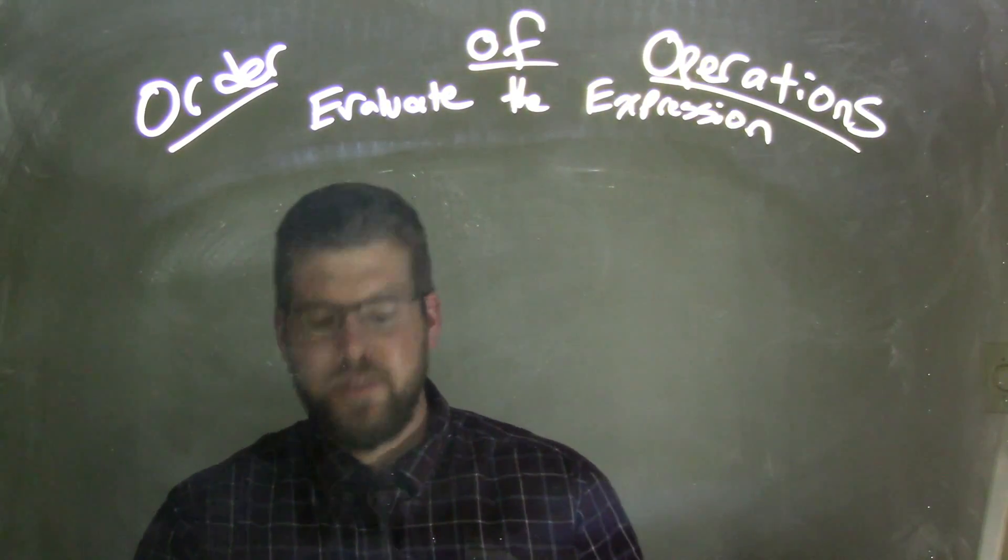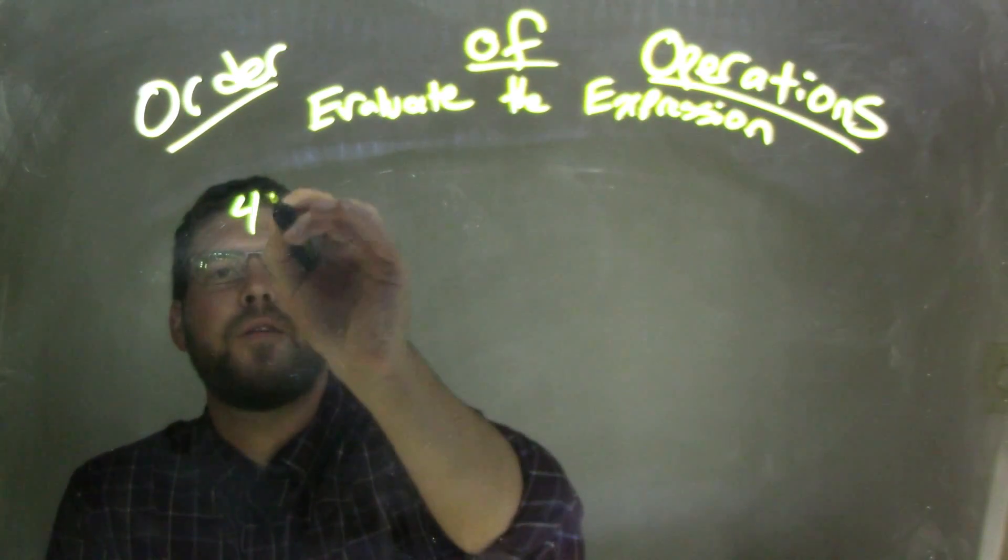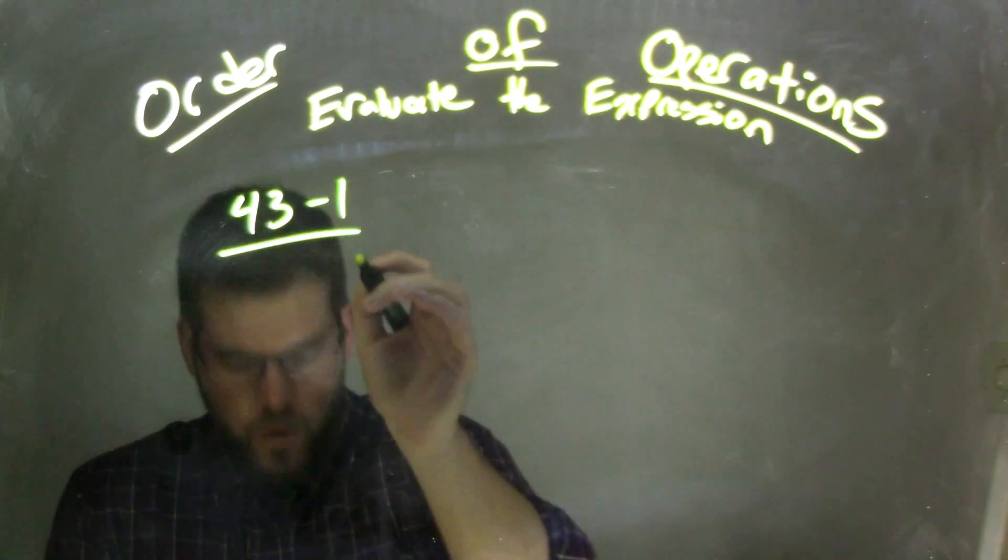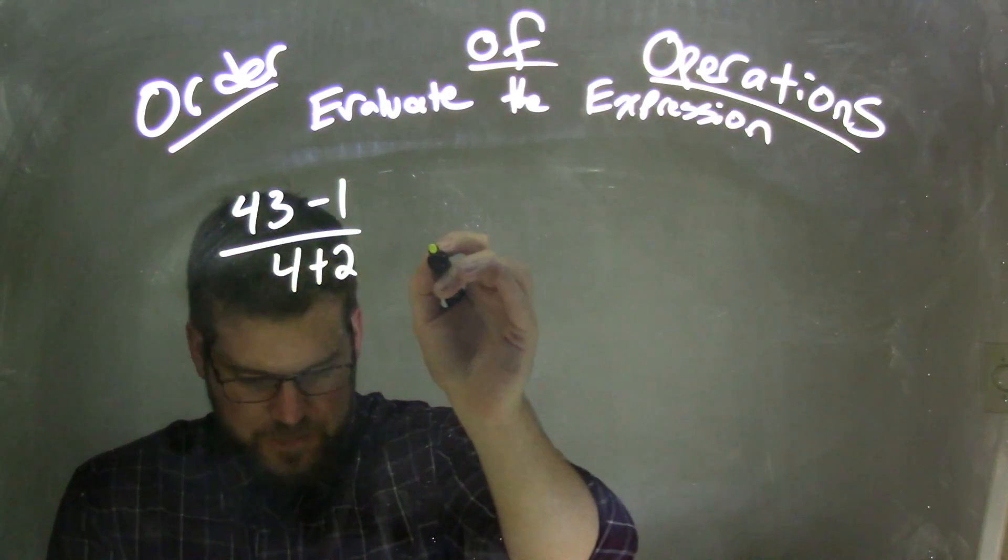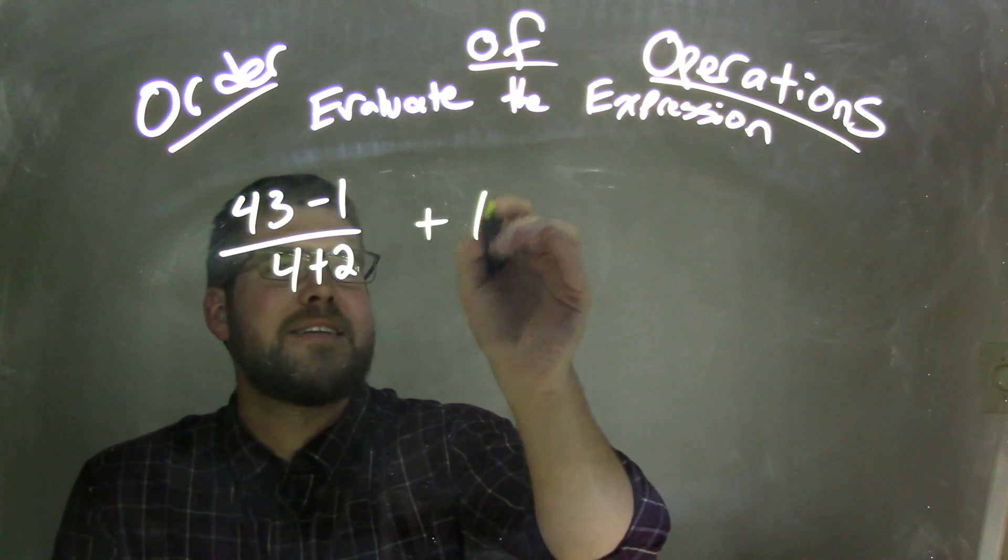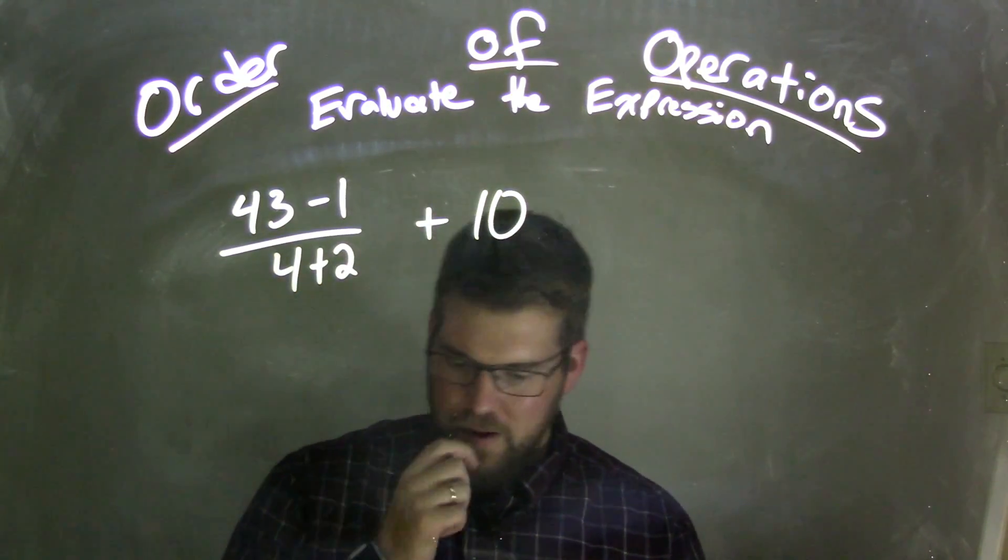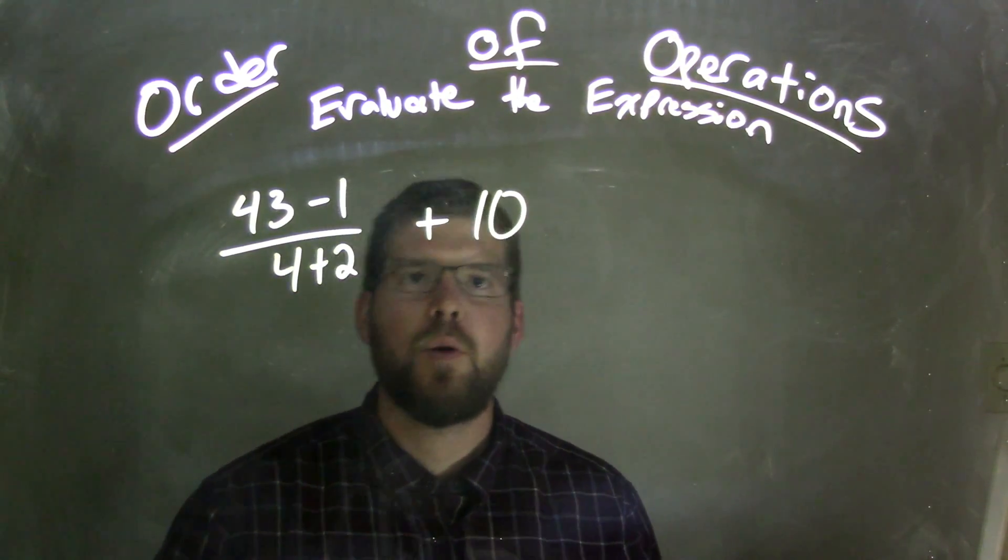So if I was given this expression, 43 minus 1 over 4 plus 2, all plus 10. So we have 43 minus 1 over 4 plus 2 plus 10.